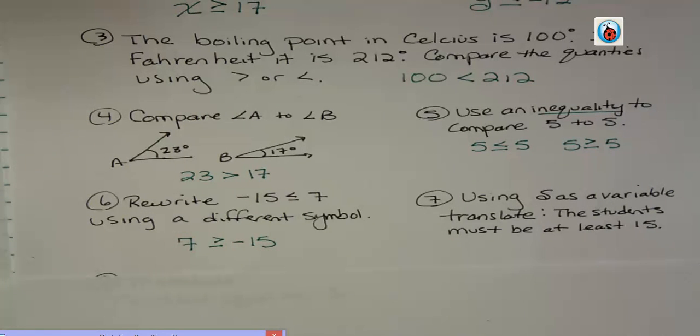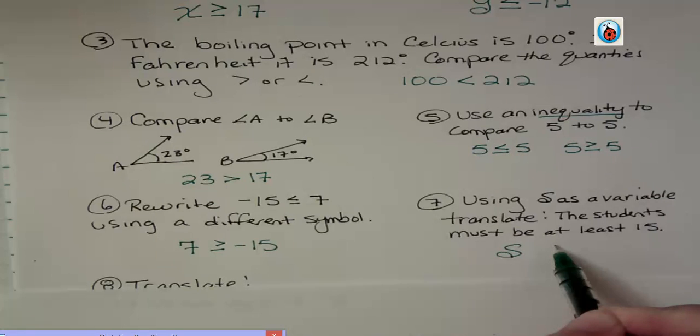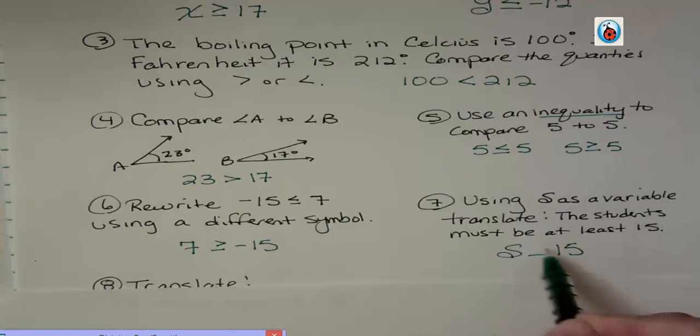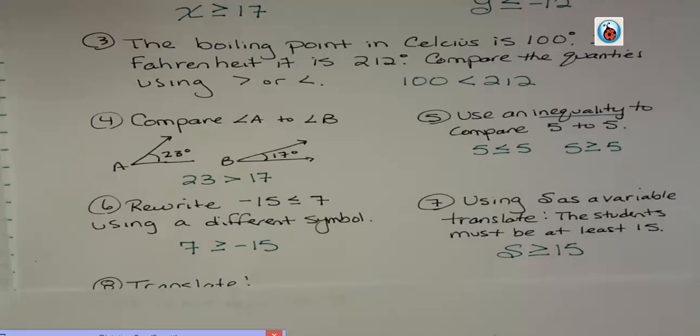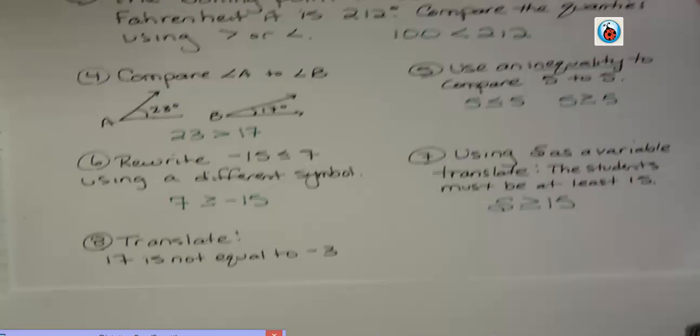Alright, using s as a variable, translate the student must be at least 15. Here's my variable s, and here's the number that I'm comparing. What do you want to do for is at least? Do you remember from earlier in the video, if they have to be at least 15, they could be exactly 15 or greater than 15, okay? So at least means greater than or equal to. And I put that one in there again because it's tricky. You have to remember it.